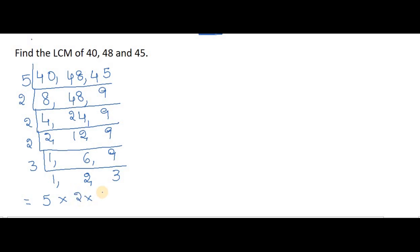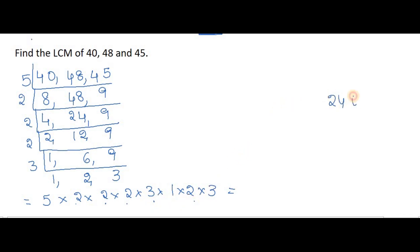So we multiply: five into two into two into two into three into one into two into three. Five twos are ten, ten twos are twenty, twenty twos are forty, forty threes are one hundred twenty, one hundred twenty twos are two hundred forty, two hundred forty threes: three zeros are zero, three fours are twelve, three twos are six — carry the seven — so the answer is 720. The LCM of 40, 48 and 45 is 720.